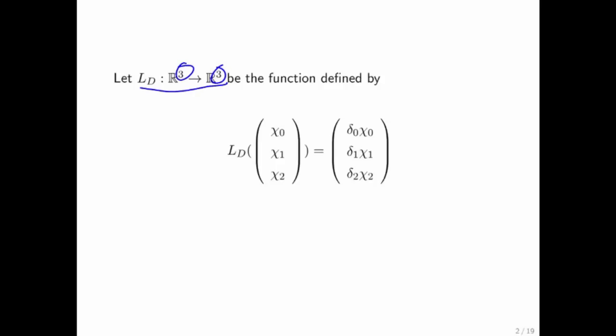And it's defined as follows. If you plug in x and you expose its components, then chi 0 is multiplied by delta 0, chi 1 is multiplied by delta 1, and chi 2 is multiplied by delta 2.